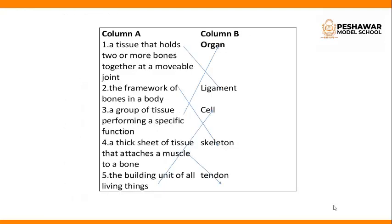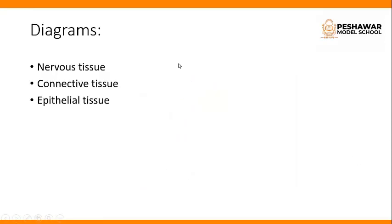Then column A and column B matching. Number 1: a tissue that holds two or more bones together at a movable joint is known as ligament. Number 2: the framework of bones in a body is known as skeleton. Number 3: a group of tissue performing a specific function is known as organ. Number 4: a thick sheet of tissue that attaches a muscle to a bone is tendon. Number 5: the building unit of all living things is cell. Now you will draw a diagram of nervous tissue, connective tissue, and epithelial tissue on your copy. These diagrams are on your book, page number 2 and 3. This is the end of the chapter. Thank you.